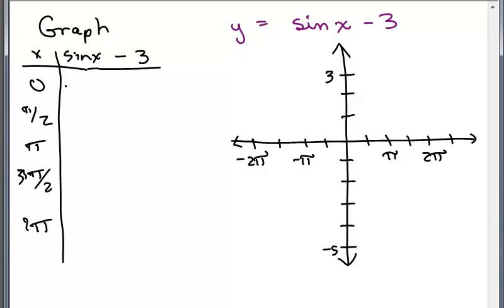It goes 0, 1, 0, negative 1, 0, right? That's the sine of x, but what's different here is I have to subtract 3 from each of those y values.